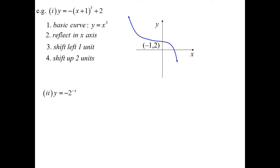y equals minus two to the power of minus x. So the basic curve is our exponential two to the power of x. This is reflection in the origin, because you'll notice the negative sign is grouped with the x, but it's also grouped with the y as well. So this will rotate 180 degrees.